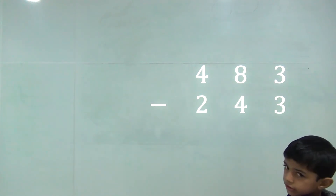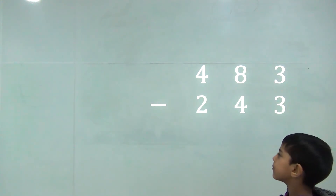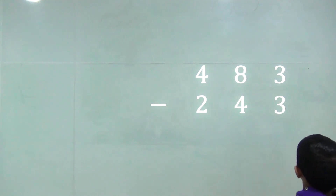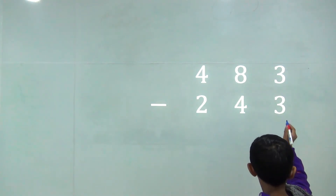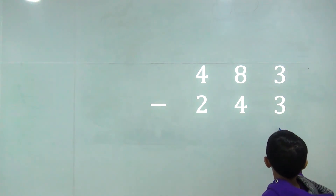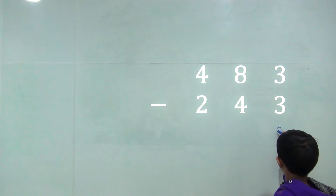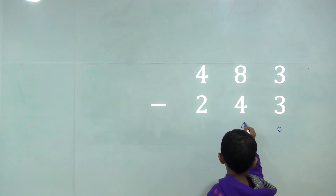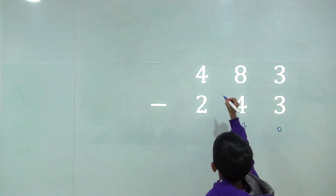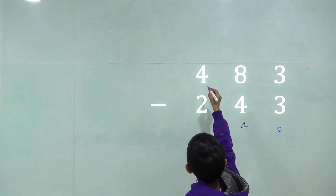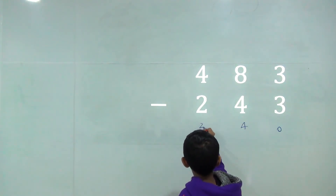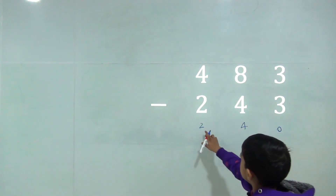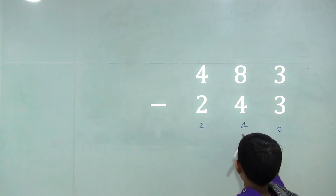Now three digit number minus digit number. Three minus three is equal zero. Eight minus four is equal four and four minus two is equal two. So the answer would be two hundred and forty.